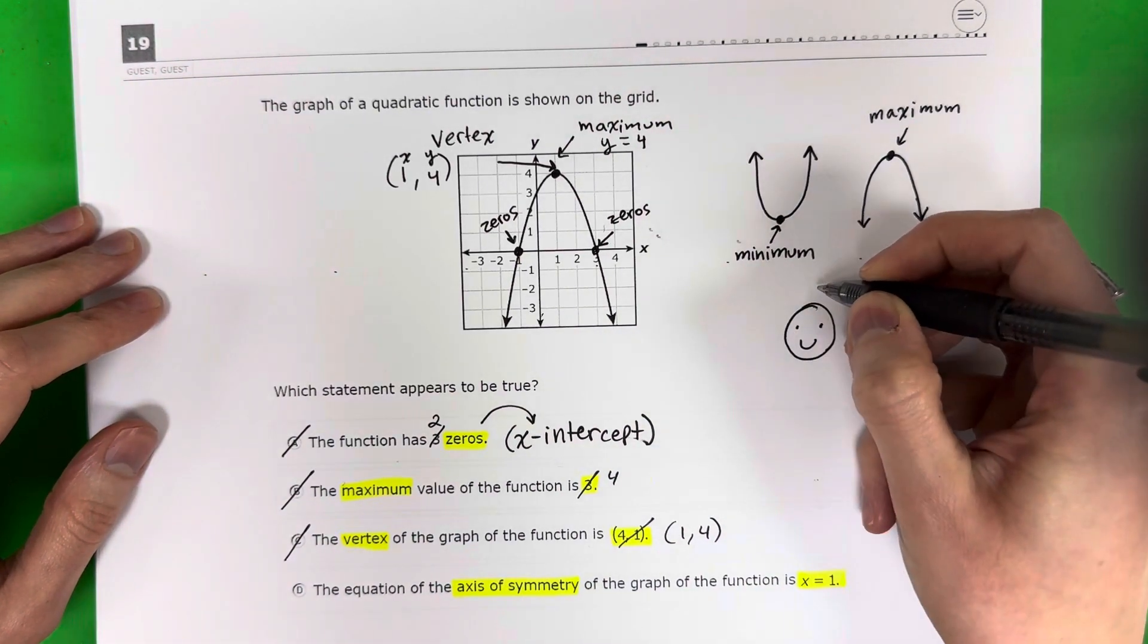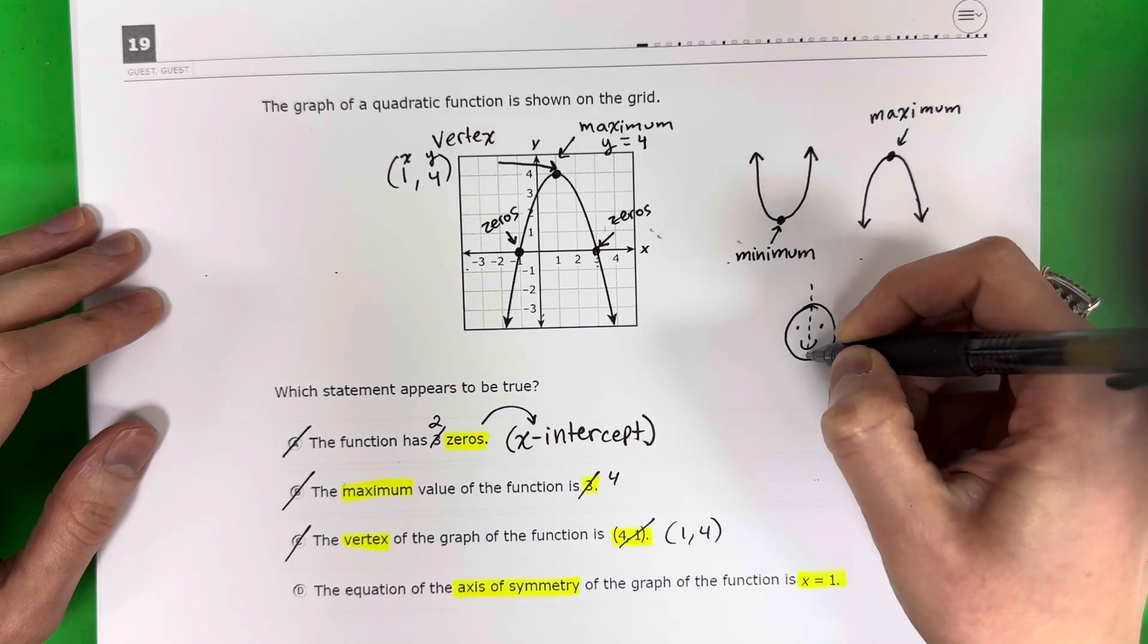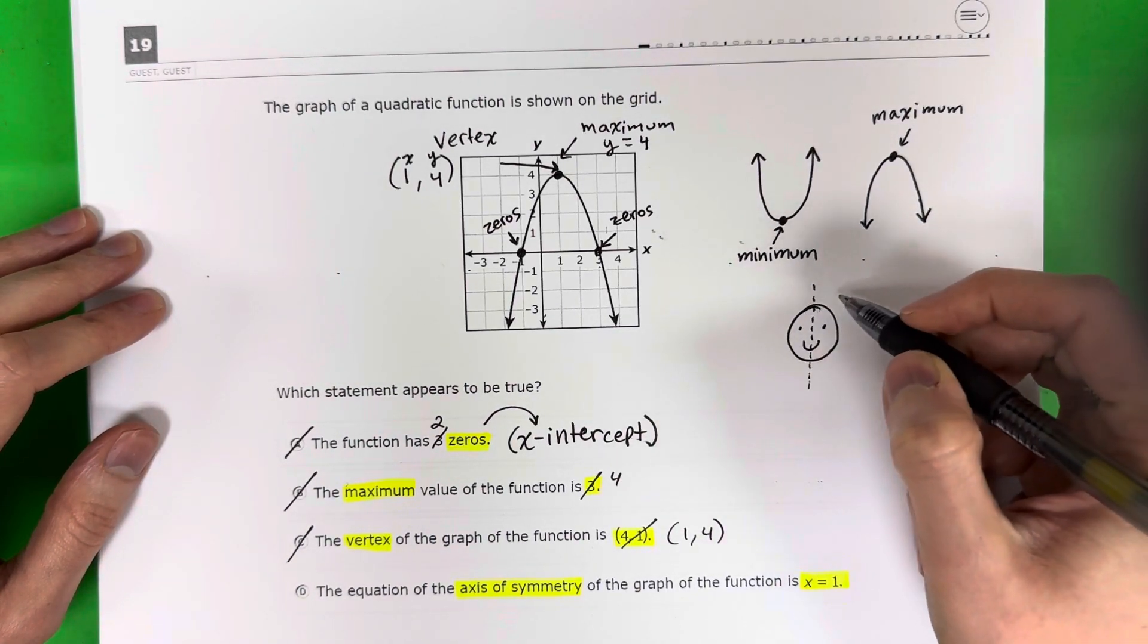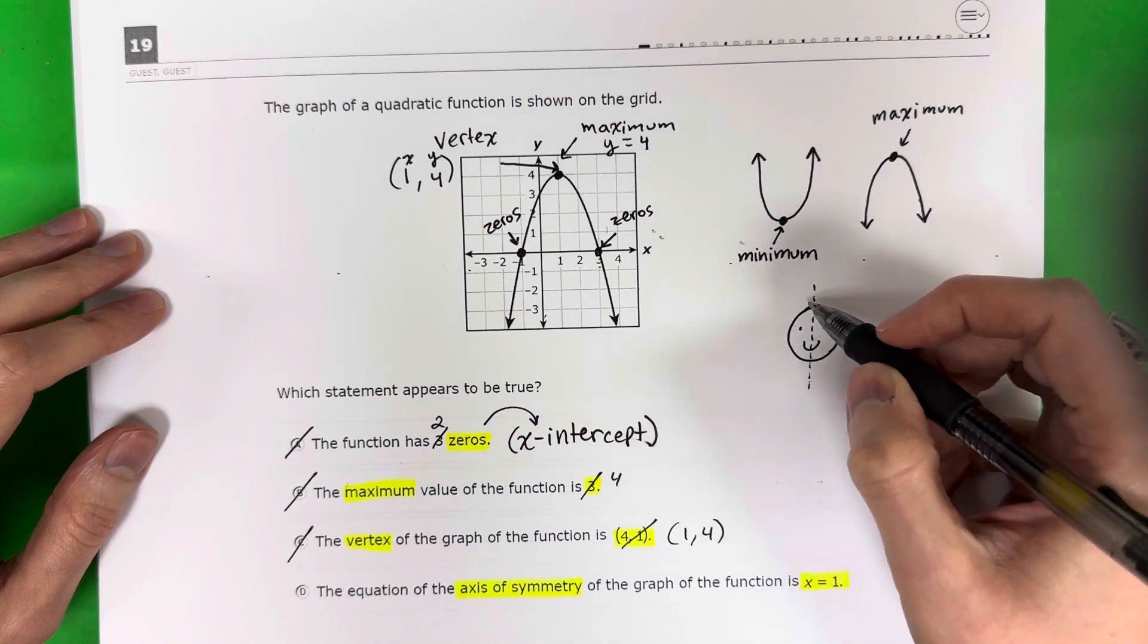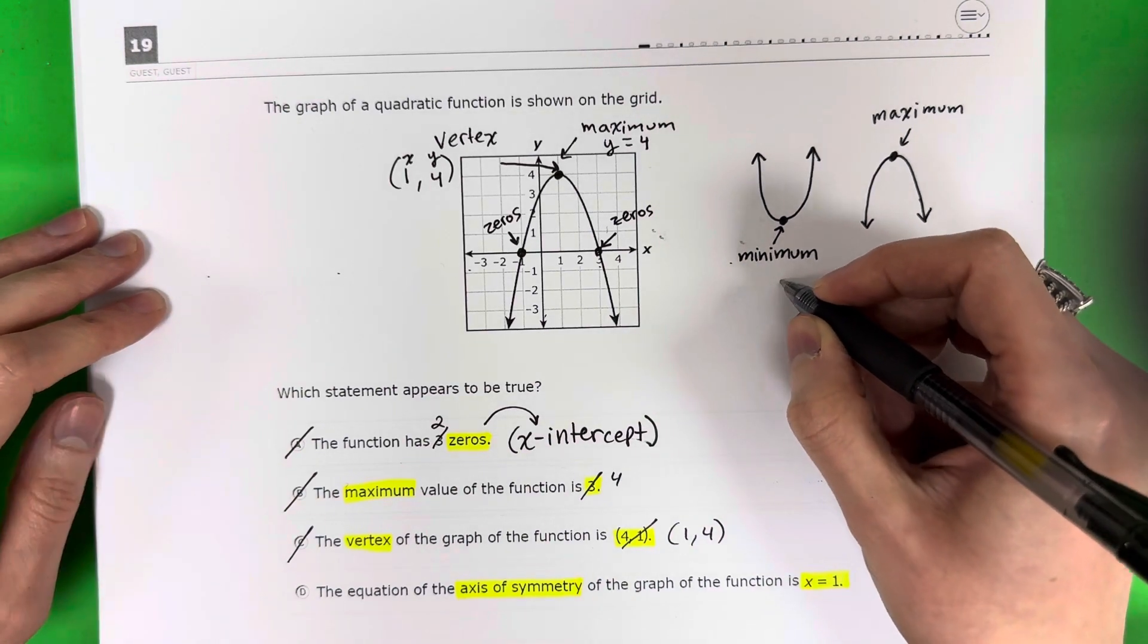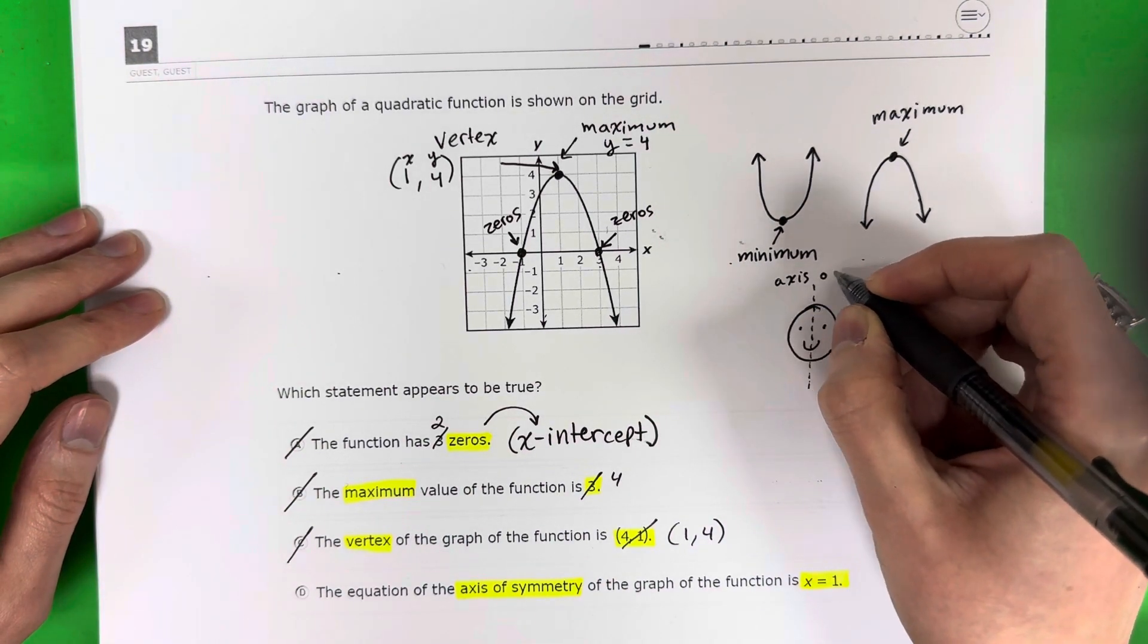You have a smiley face. This is a person. Okay, if you do a line, if you put a line vertically, right, breaking the left side from your right side, the left side and the right side should be very similar to each other. Okay, so that is the axis or the line of symmetry.